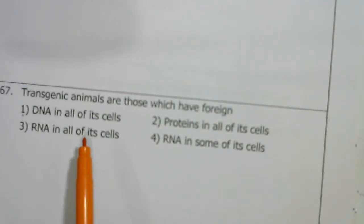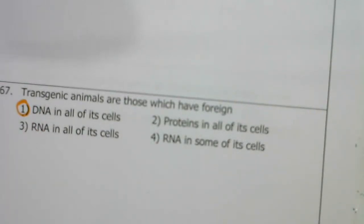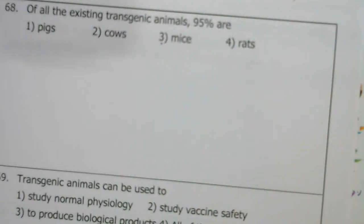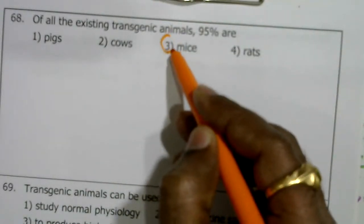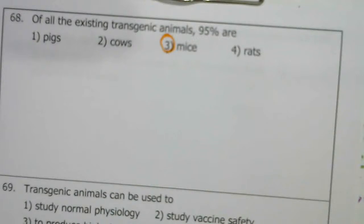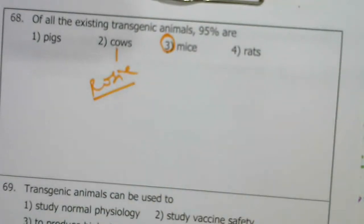Transgenic animals are those which have foreign DNA in all of their cells. Of all existing transgenic animals, 95% are mice. To produce a transgenic cow takes almost two years. The transgenic cow Rosie was the first transgenic cow produced.